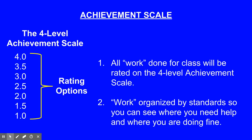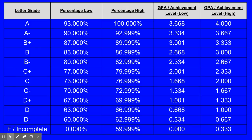In a standards-based system, student performance on the standard is based on a four-level achievement scale, one through four. Earning a four is not only possible, we will actually teach to the four. We believe that by teaching to the four, we can help all students raise their performance level. We recognize the importance of GPA and letter grades in college admission and scholarships. Therefore, we will not jeopardize a student's opportunity to maintain the highest grade point average possible. This slide represents the traditional letter grade percentage and GPA chart we currently use. In the coming slides, I will demonstrate how this chart with modifications is applied to standards-based assessment and reporting.